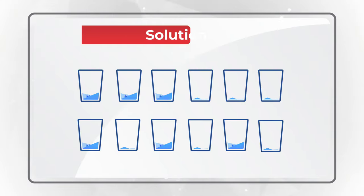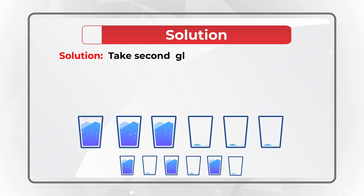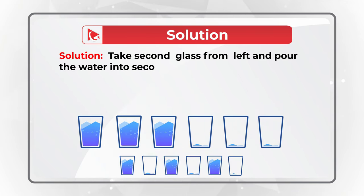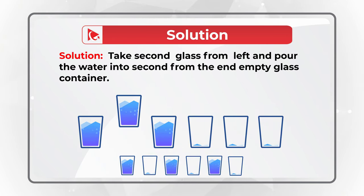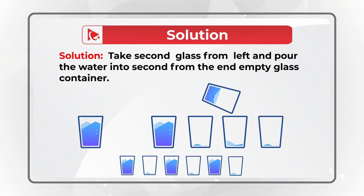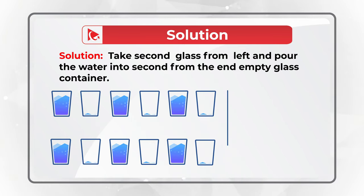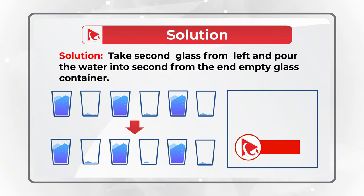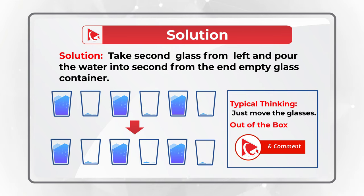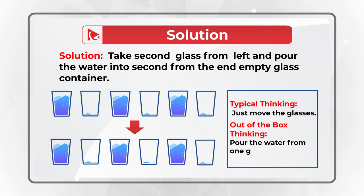As I mentioned, you need to think out of the box. The solution is to take the second glass from the left and pour the water into the second from the end empty glass container. Typical thinking is just to move the glasses, but out-of-the-box thinking is to pour the water from one glass to another.